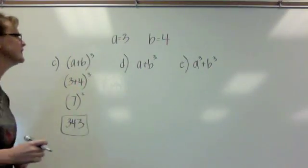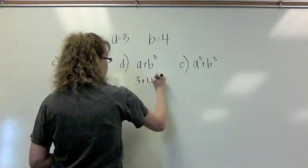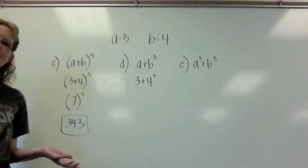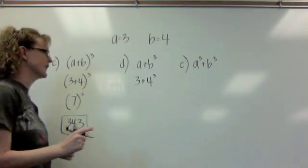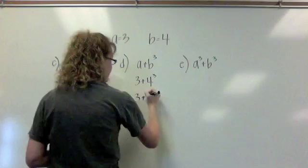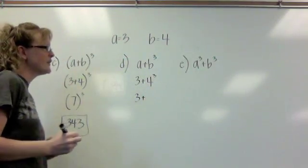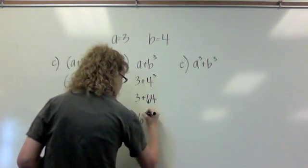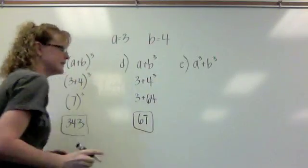For D, we are substituting in 3 plus 4 to the third power. In this case, we don't have parentheses, which means we should do exponents first. So we have 3, doing 4 to the third, 4 times 4 times 4 is 64. And then we'll take 3 plus 64 to give us 67.